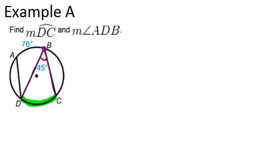So that means that the arc is twice the measure of the angle. So arc DC must be 90 degrees because 45 times 2 is 90. The measure of arc DC equals 90 degrees.